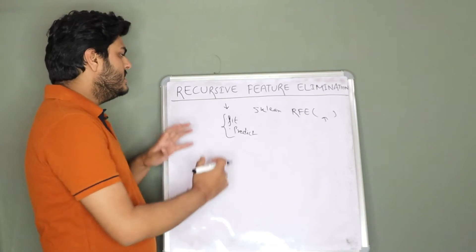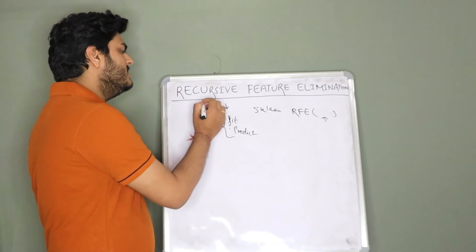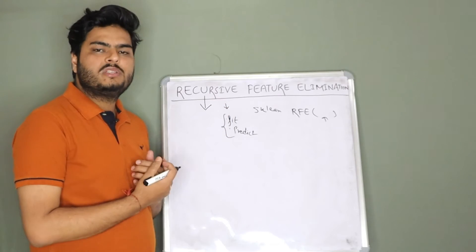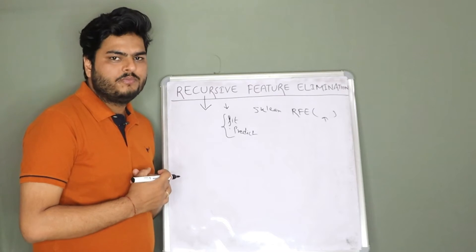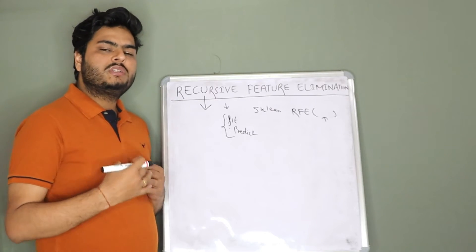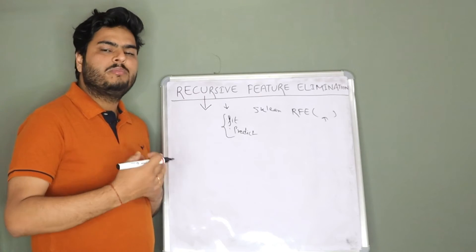First of all we will understand the meaning of these words. Meaning of recursive is something which we do in repetition or many times to get different set of results. Many people with CS computer science background will be able to understand me more clearly. Recursion is a common terminology in CS background.